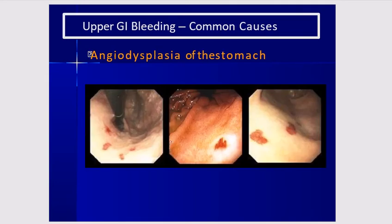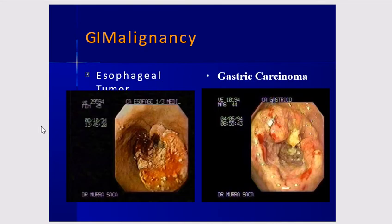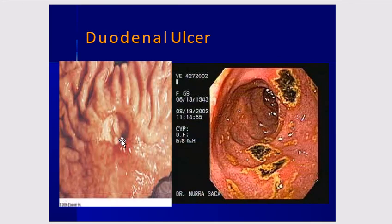This is angiodysplasia of the stomach, which is a vascular malformation. This is a gastric carcinoma and esophageal carcinoma. These are typical appearances on endoscopy, along with further examples of duodenal ulcer.